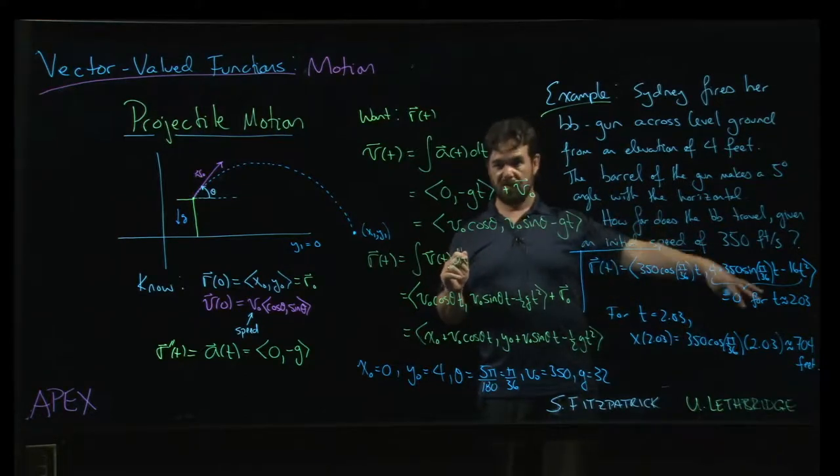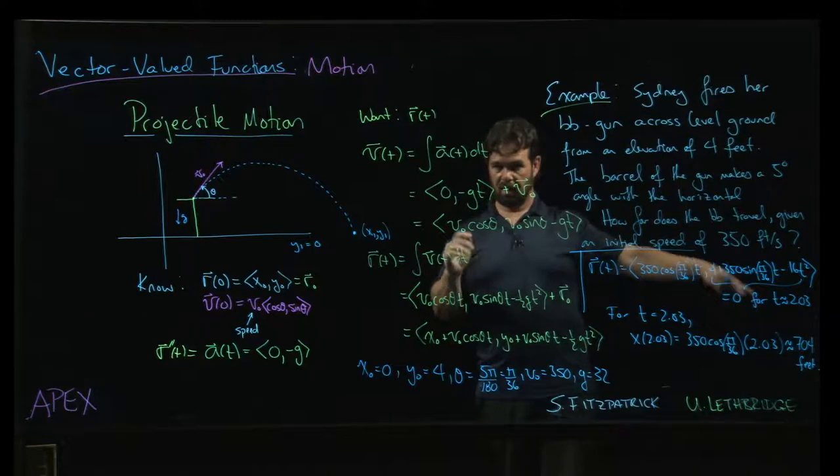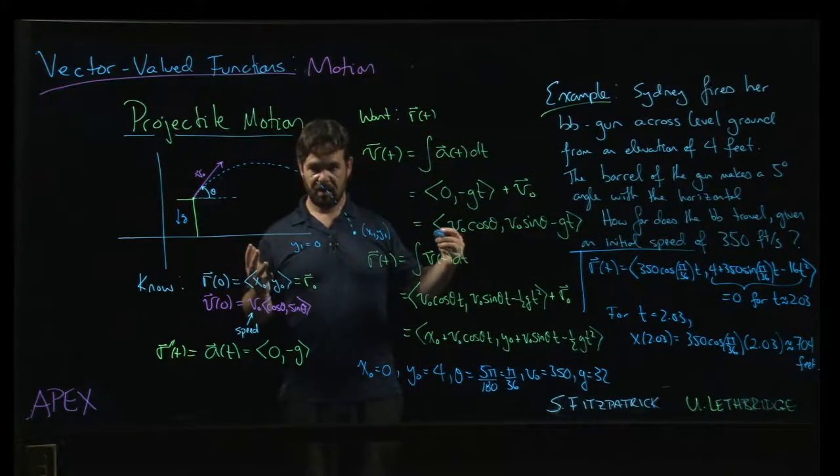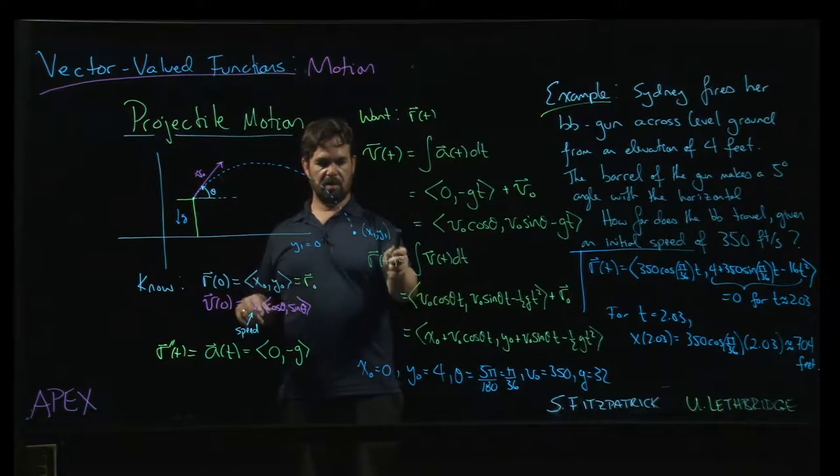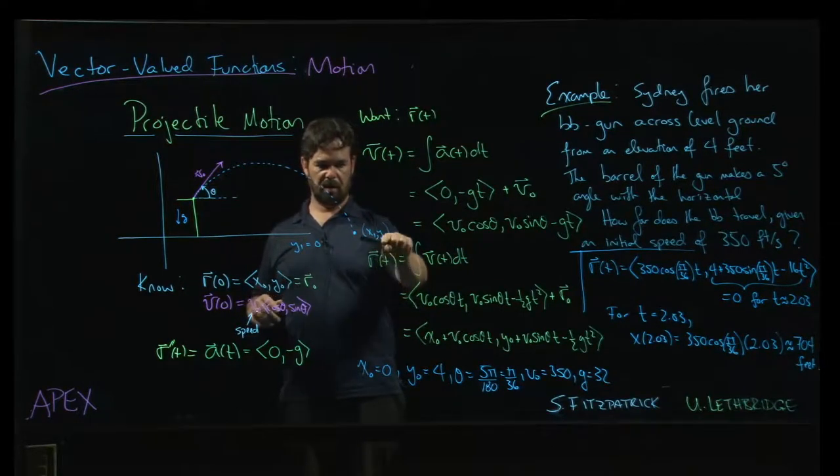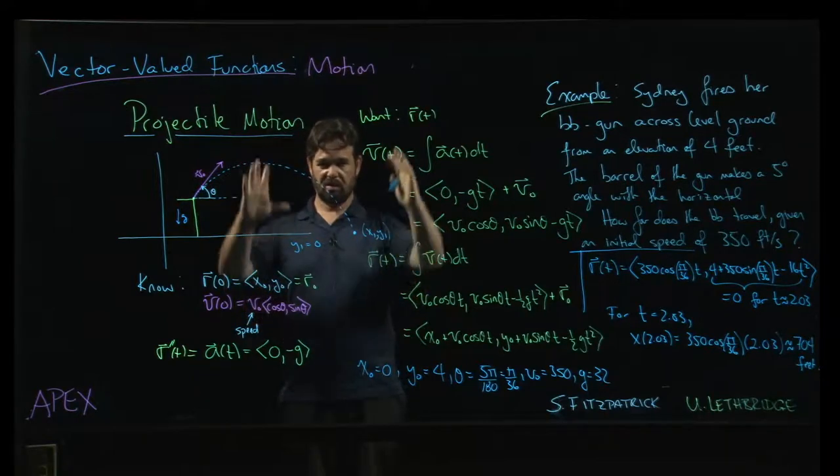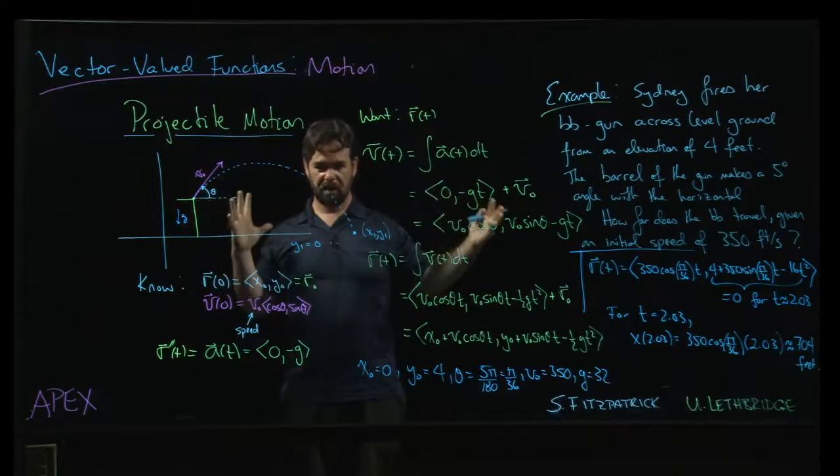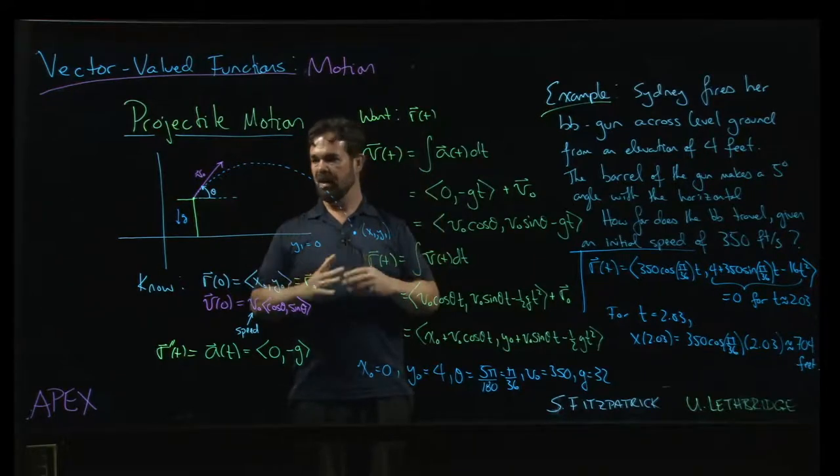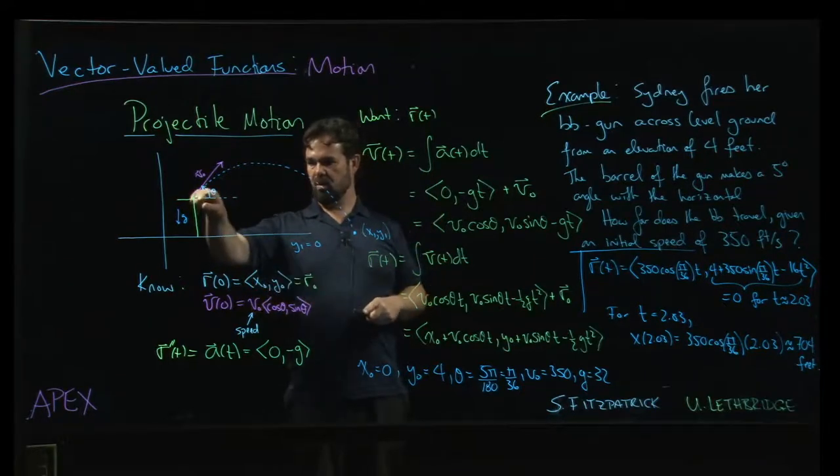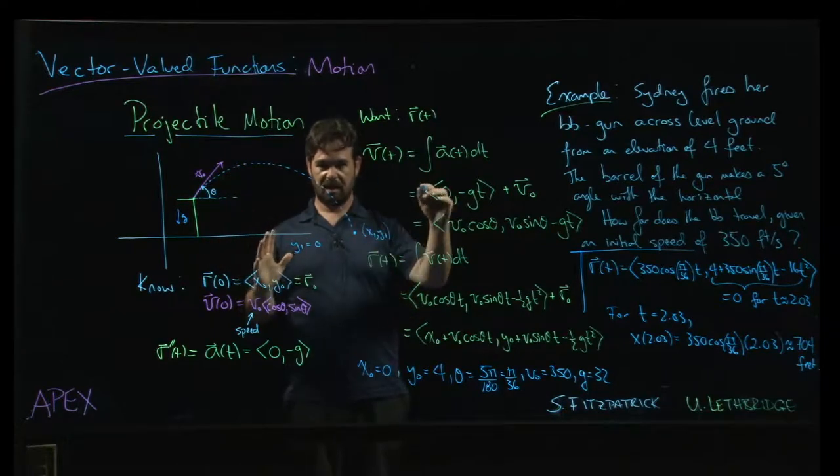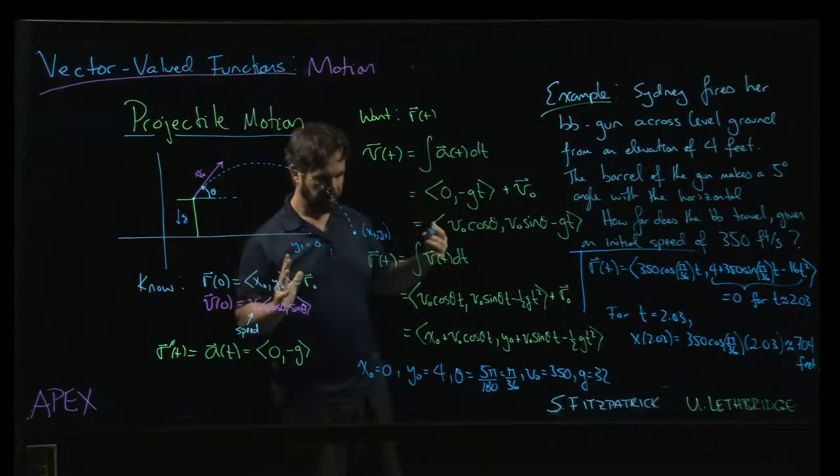Similar idea. In the next example, instead of being given the elevation and trying to figure out how far the thing travels, you're given a target. So basically, you're given a target value for an endpoint, and now y₁ won't be zero in that case because the target's probably up on the wall or something like that. But you know how far away the target is and how high it is,